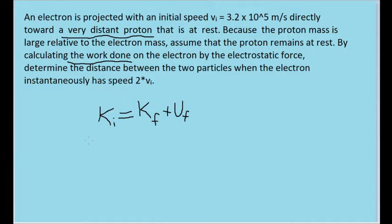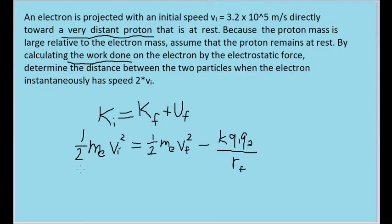Let's rewrite these terms to make it more clear which variables we have and which variables we want to solve for. The kinetic energy of a moving object is equal to one-half times the mass times the speed squared. I wrote the mass as m sub e to indicate that this is the mass of an electron, which we should know.